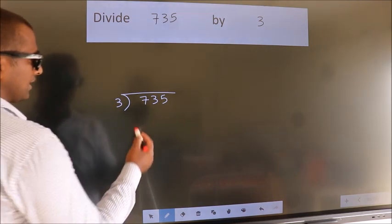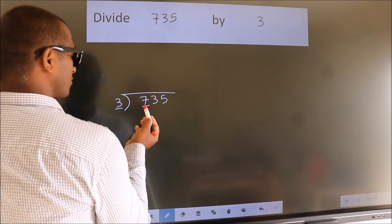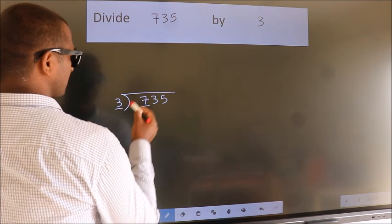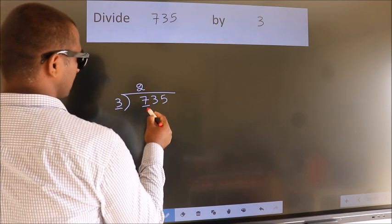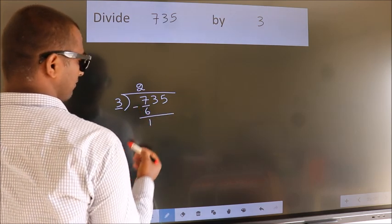Next. Here we have 7, here 3. A number close to 7 in 3 table is 3 2s, 6. Now we should subtract. We get 1.